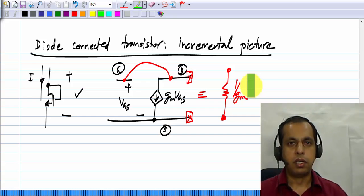So, a diode connected transistor has an incremental equivalent, which is a resistor value 1 by G M, and G M has to be evaluated at the operating point.